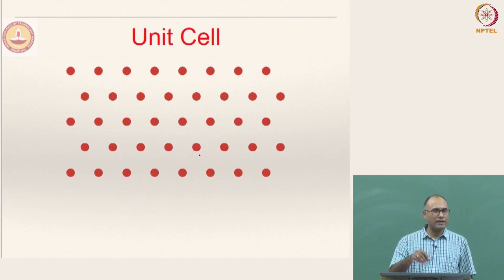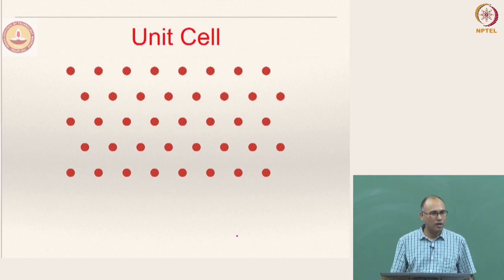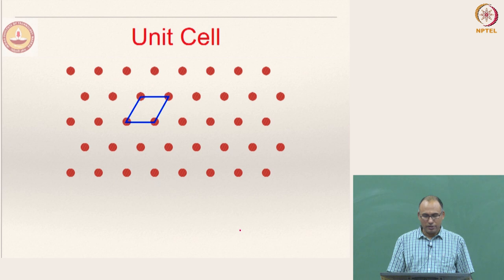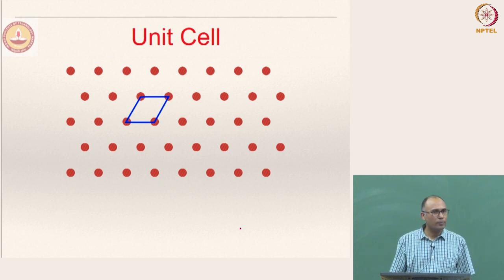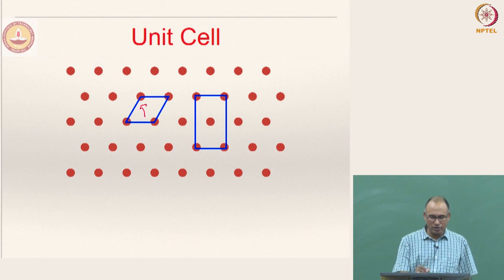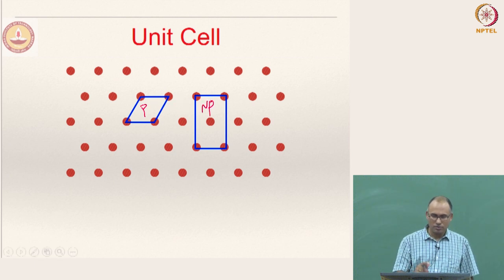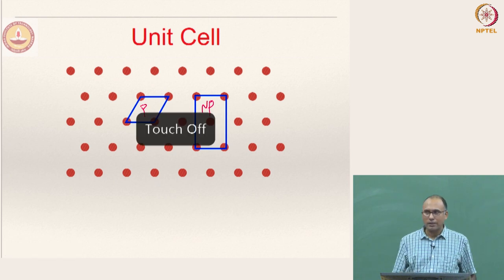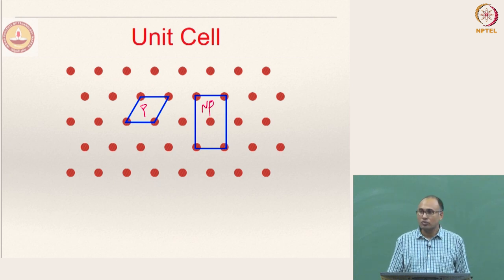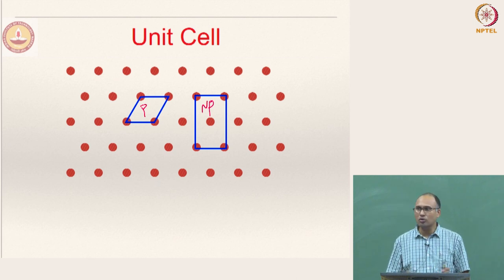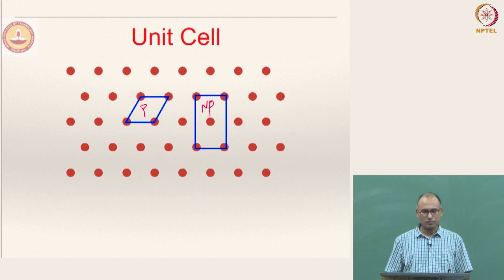Previously we saw a rectangular unit cell giving a different set of unit cells. Here it is not possible to get a square as a unit cell because of how the lattice points are arranged — you find something else as your appropriate unit cell. We also saw a primitive unit cell and a non-primitive unit cell. The non-primitive unit cell has effectively two lattice points per unit cell, and you can also choose non-primitive unit cells to fill space.